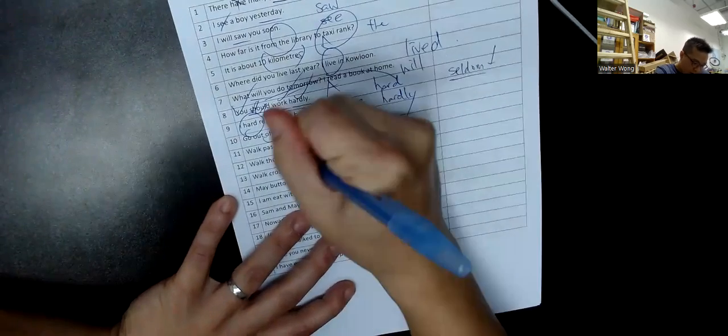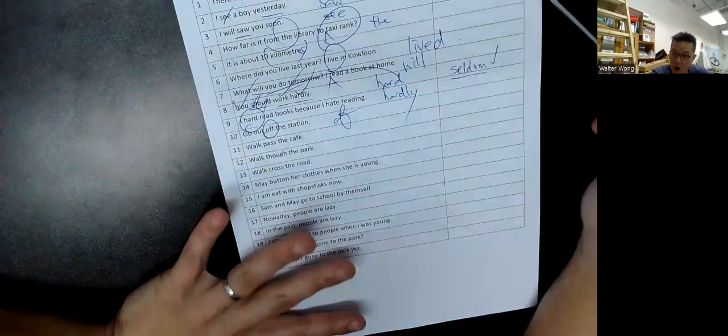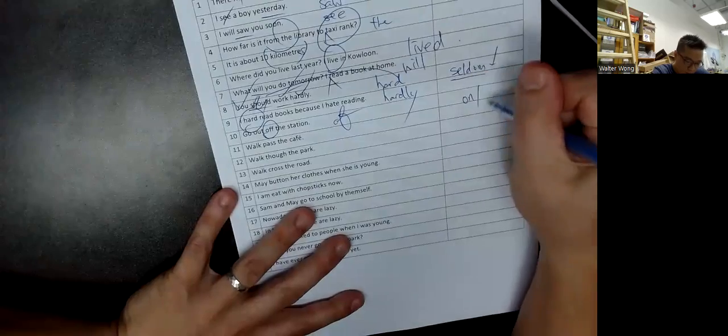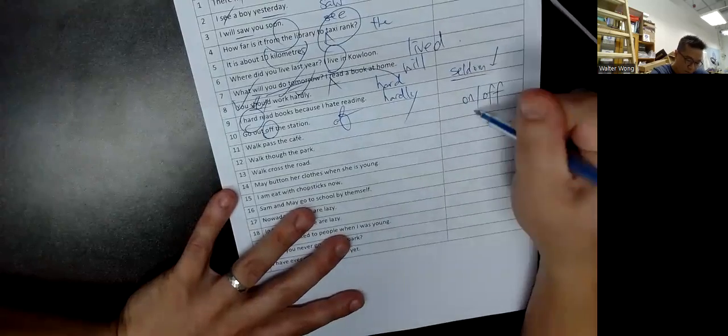To leave is go out of, not off. On is paired with off. Off is independent.